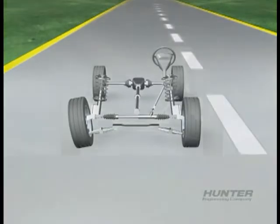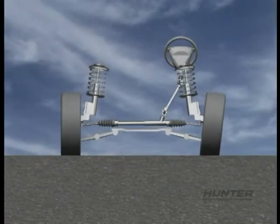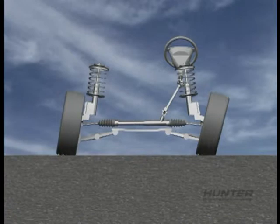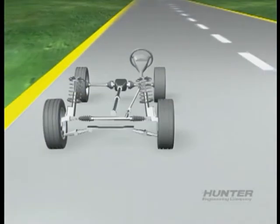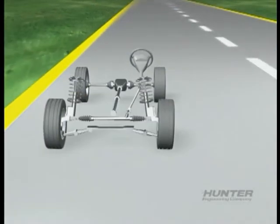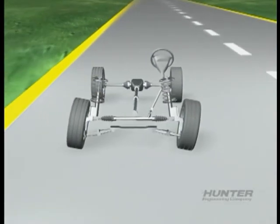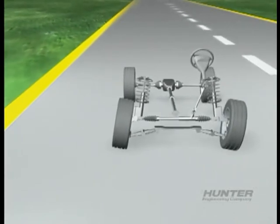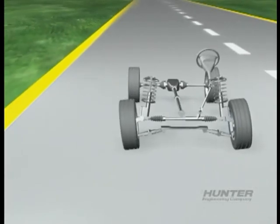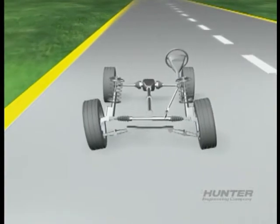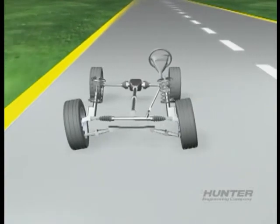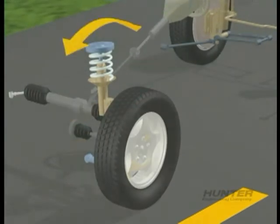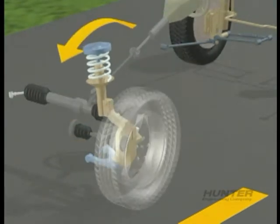A pull problem is another indicator of misalignment. An alignment pull can be caused by side-to-side errors in camber or side-to-side errors in caster. If the front wheels are both tilted to the left, this can cause the car to always want to steer to the left. If the front wheels are both tilted to the right, the car will tend to steer to the right.